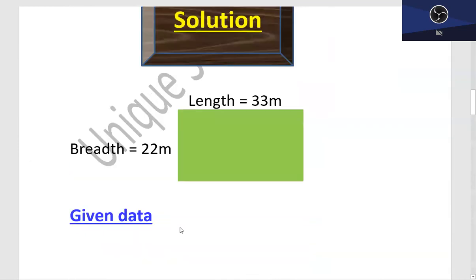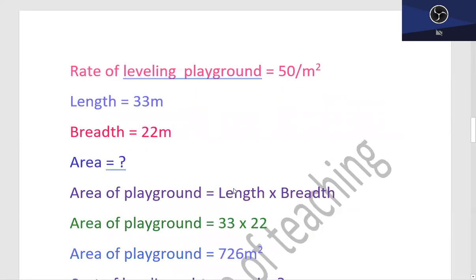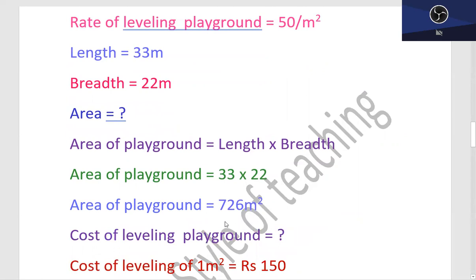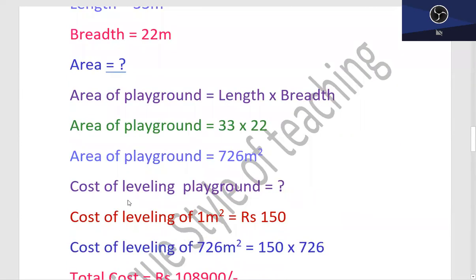This is the playground. This is the rectangular shape. This is why I have the formula applied: length into breadth. Length is 33 and breadth is 22. When you multiply 33 and 22, you will find the answer 726 meter square.